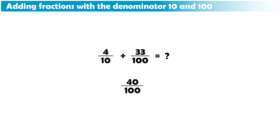So, to add 4 tenths to 33 hundredths, we can first convert 4 tenths to 40 hundredths. So, we will have 2 fractions with equal denominator, we add 40 to 33 to get 73, and leave the denominator 100 unchanged, and our answer will be 73 hundredths.